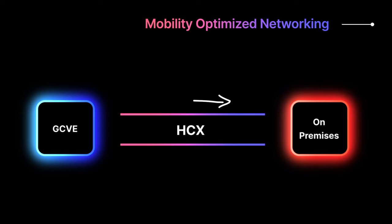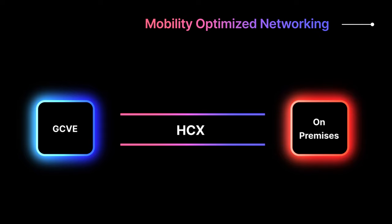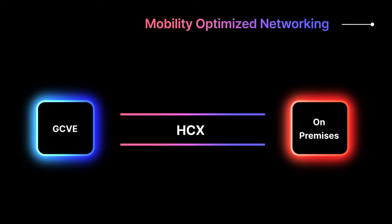Mobility-optimized networking helps prevent network tromboning between on-premises networks and cloud-based networks used by HCX. With GCVE and HCX, you can continue to work during business hours while systems administrators migrate your teams to the cloud, without the downtime typically associated with other types of virtual machine migration.